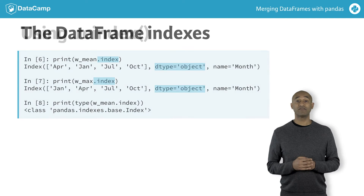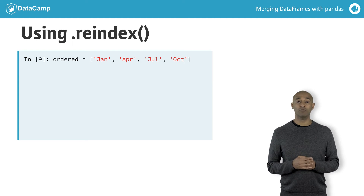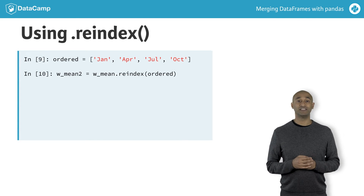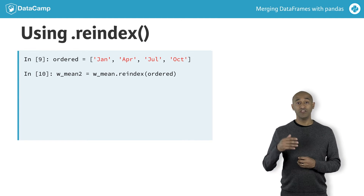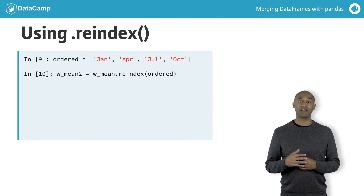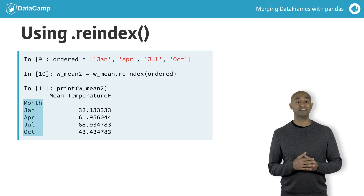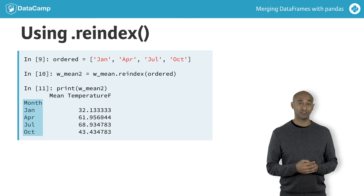We can define a list called 'ordered' to impose a deliberate ordering on the index labels of W_mean. The data frame reindex method creates a new data frame, W_mean_2, with the same data as W_mean but with a new row ordering according to the input list 'ordered'. We can see that W_mean_2 has the desired chronological ordering.